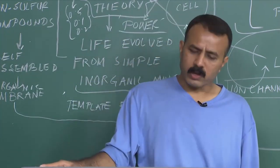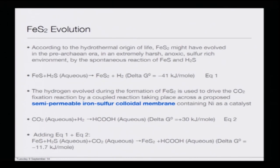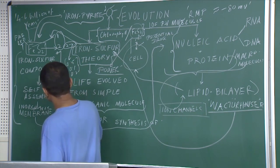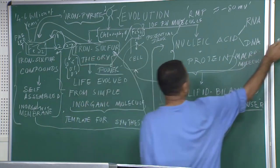Under those conditions, in the harsh anoxic sulfur-rich environment, the spontaneous reaction of FeS and H₂S possibly led to a reaction producing FeS₂ and H₂. This reaction is thermodynamically feasible because it has a delta G of minus forty-one kilojoules per mole. The hydrogen evolved during the formation of FeS₂ is used to drive the carbon dioxide fixation reaction by a coupled reaction taking place across a proposed semi-permeable iron sulfur colloidal membrane.